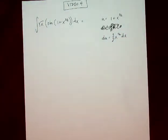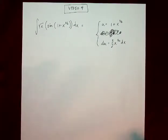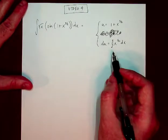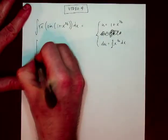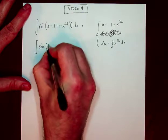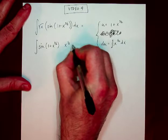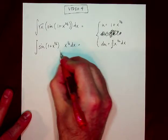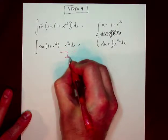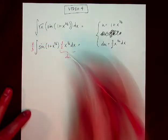du is equal to three halves x to the one half dx. If you pick the wrong u, you will get an unusable du. In this case, we actually have everything that we need. Root x is the same thing as x to the one half. If I put it over here next to my dx, I see that the only thing missing to find my du is this three halves right here. And I can multiply by three halves as long as I multiply by two thirds as well.